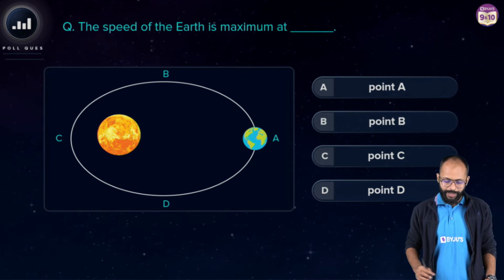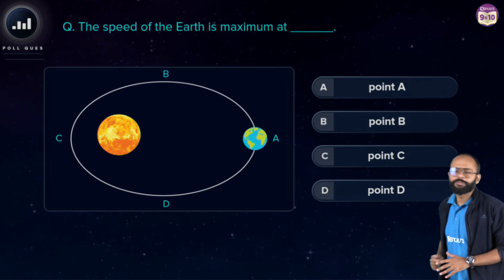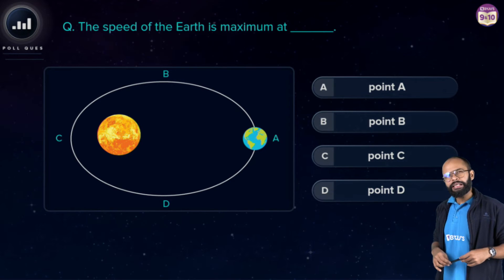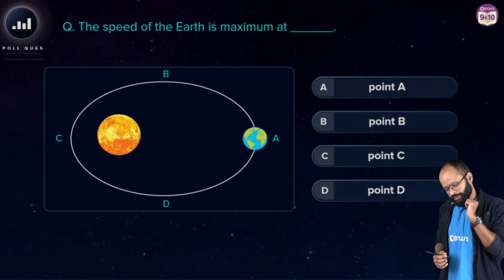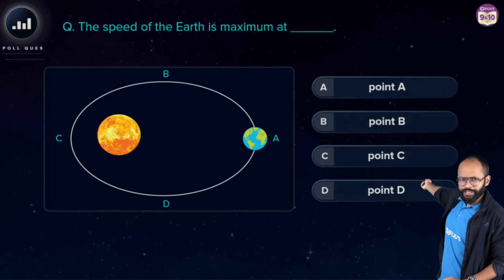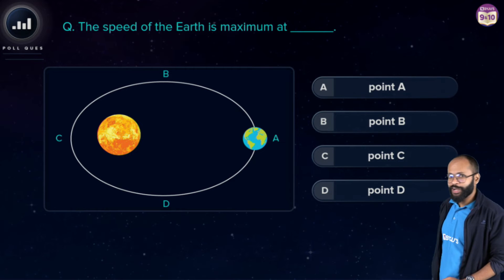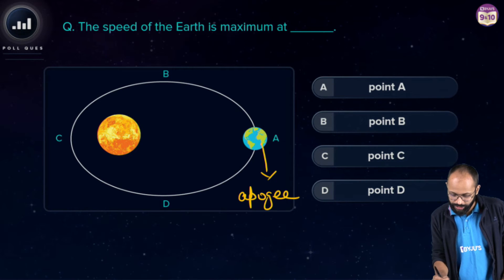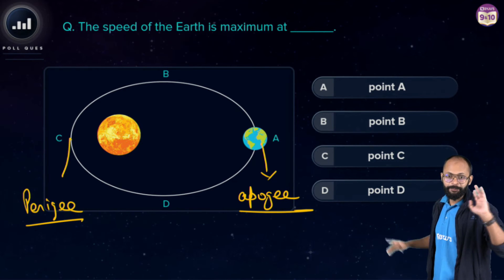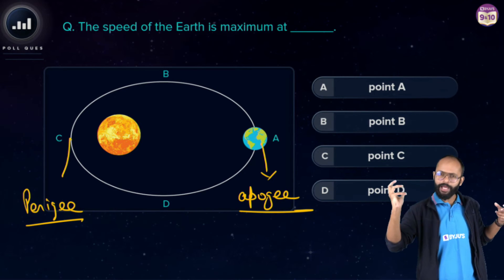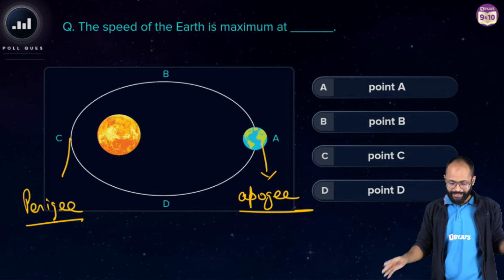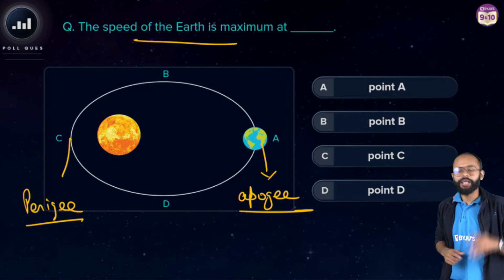Question: The speed of the Earth is maximum at which point — A, B, C, or D? Using the Second Law, the line joining the planet and the sun sweeps equal areas in equal intervals of time. When the planet is far from the sun it moves slow; when it is near (perigee) it moves fast.